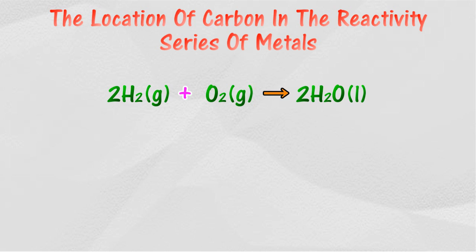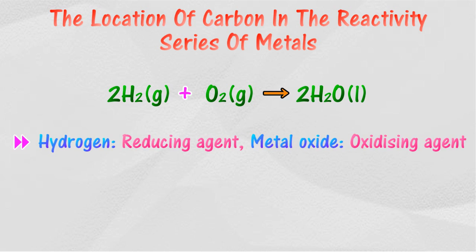When hydrogen gas flows over a hot metal oxide, hydrogen acts as the reducing agent to reduce the metal oxide to its metal. The metal oxide acts as the oxidizing agent to oxidize hydrogen to water.